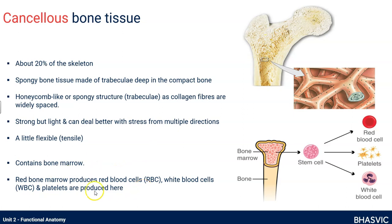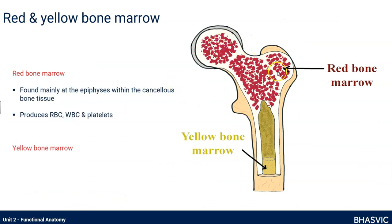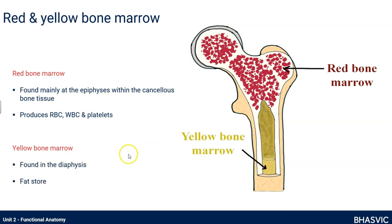Let's move on to look at the two types of bone marrow. Red bone marrow is in the cancellous bone at the epiphyses and produces blood cells. Yellow bone marrow is in the medullary cavity, in the diaphysis — the length of the bone — and this is a fat store.